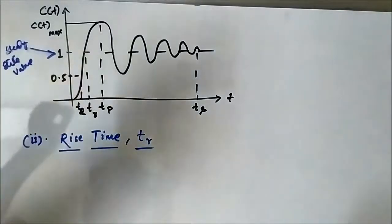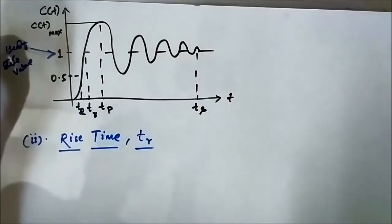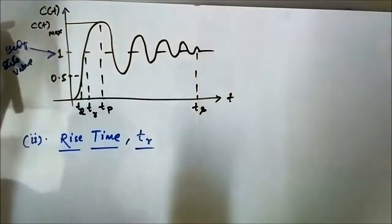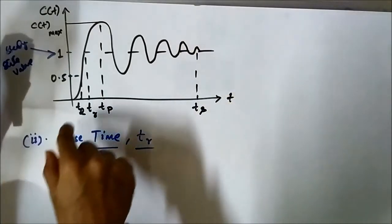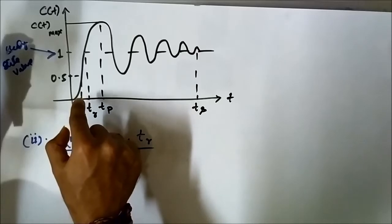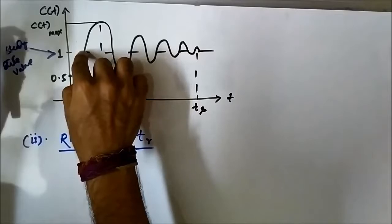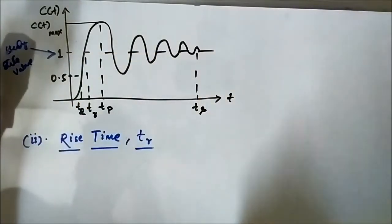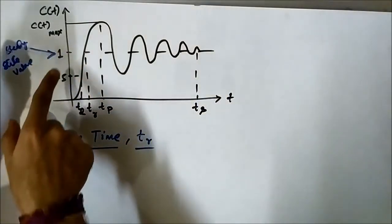The next parameter is rise time. Looking at the waveform, the rise time is the time instant at which the output response reaches the steady state value for the first time. So the definition of rise time is: the time instant at which the output response reaches the steady state value for the first time.